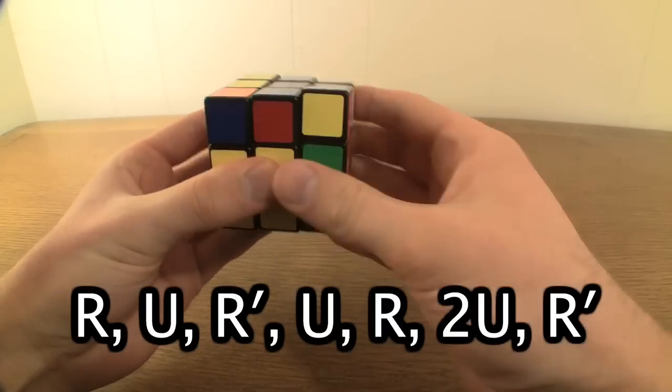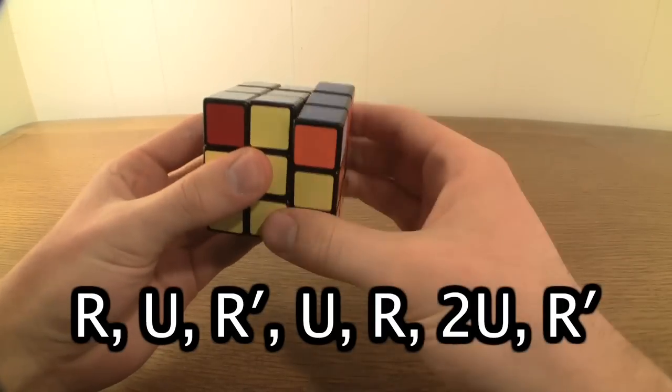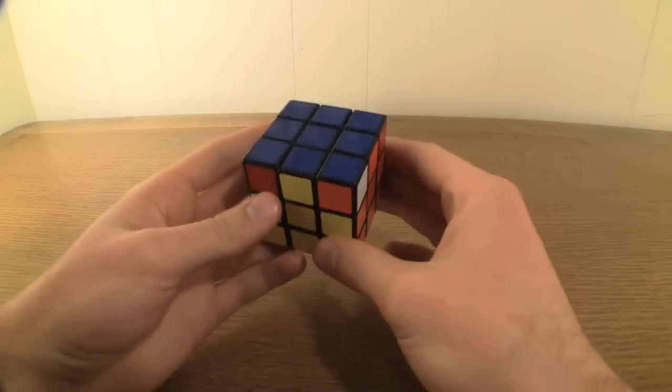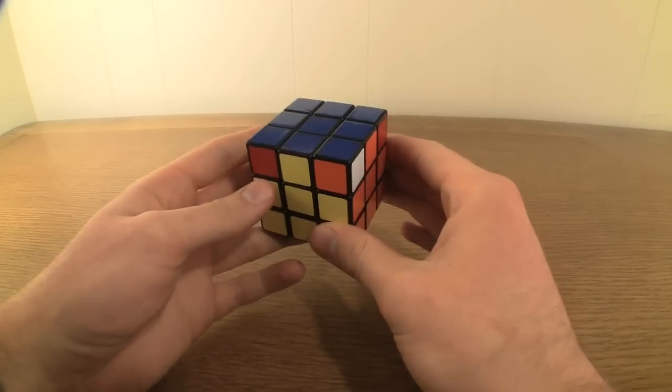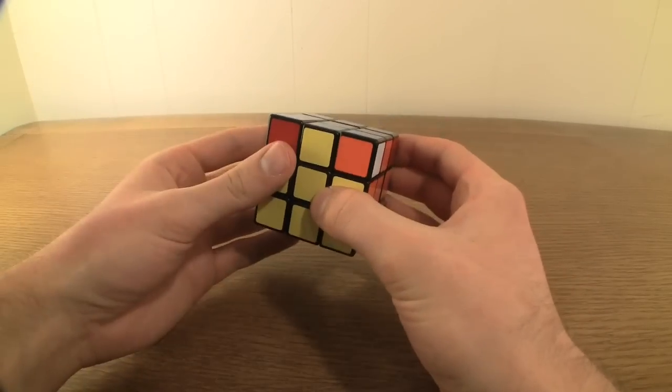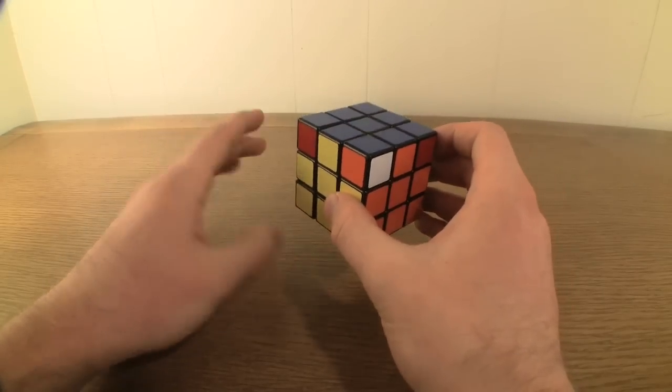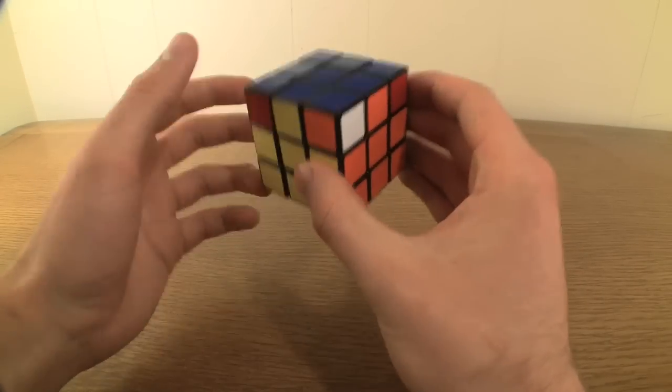The two edges that line up will now be adjacent to rather than across from each other. Sometimes the two edges that line up will be adjacent from the get-go. No matter how you get to this point, however, what you do from here is the same.